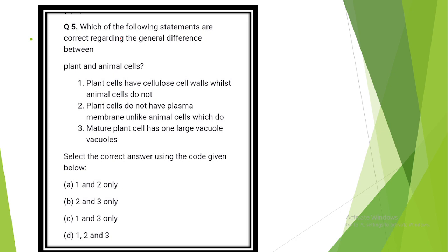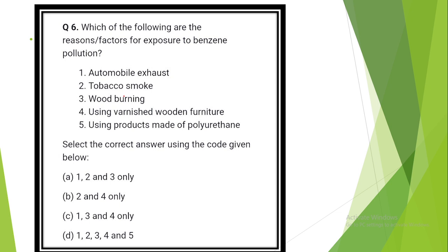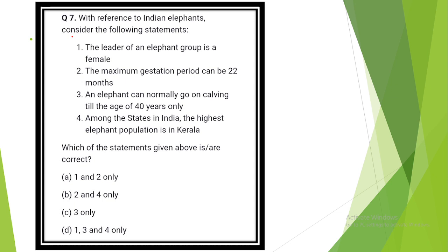Which of the following statements are correct regarding the general difference between plant and animal cells? Option C is correct. Plant cells have cell walls and animal cells do not. The mature plant cell has one large vacuole. Question number 23. Which of the following are reasons or factors for exposure of benzene pollution? The answer is option D: Automobile exhaust, tobacco smoke, wood burning, using varnished wood furniture, using products made of polyurethane.